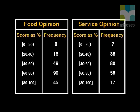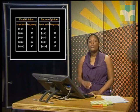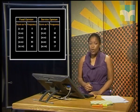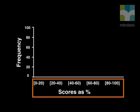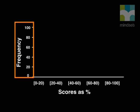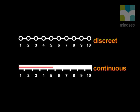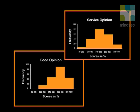Now let's take our grouped data, shown as percentages, and put them into a histogram. To draw the histogram, we need to decide what goes on the x-axis and what goes on the y-axis. The independent variable, the score, will be on the x-axis. The y-axis must represent the dependent data, and thus it will show the frequencies. Remember, for a histogram, the data must be continuous and not discrete. Here are histograms of the results of the food and service surveys from the restaurant.